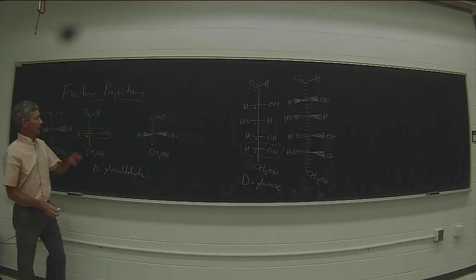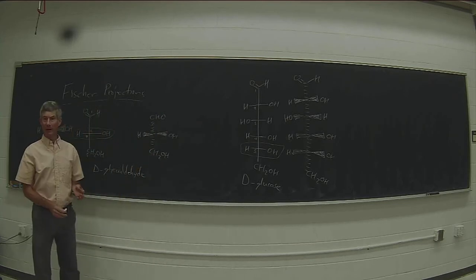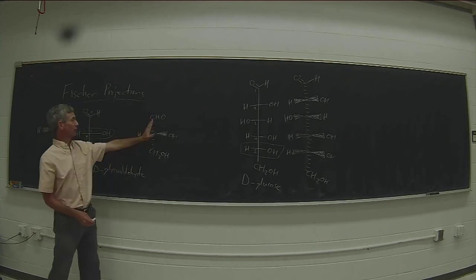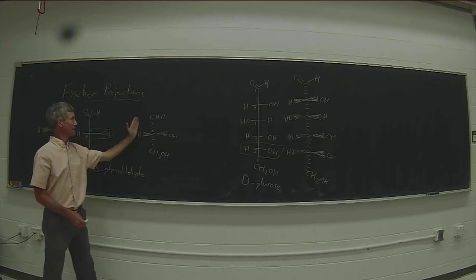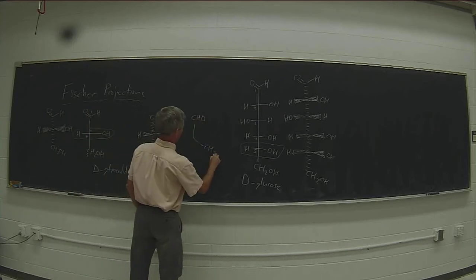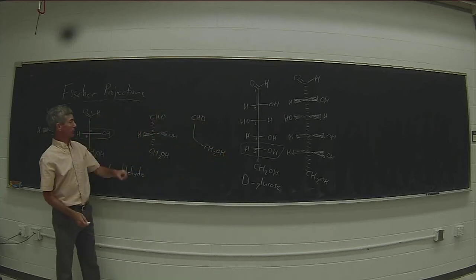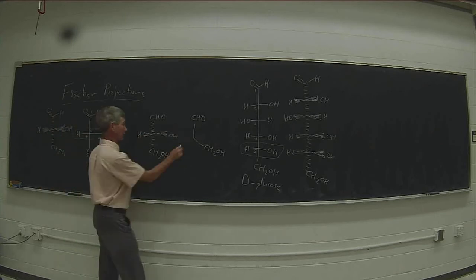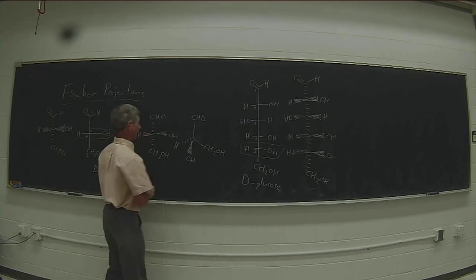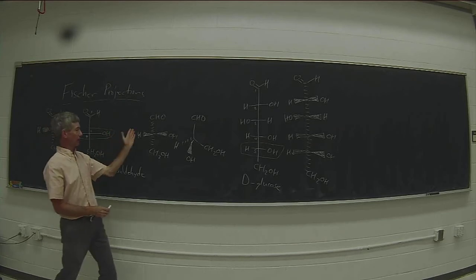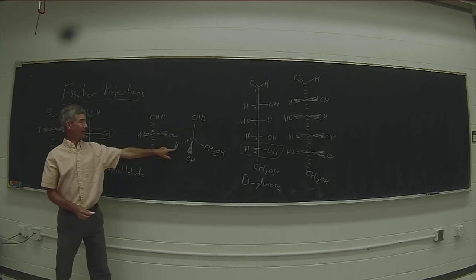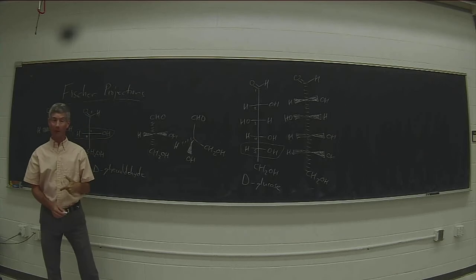But then the second thing you should do is place it into the plane of the board, so that everything that was on the vertical is now in the plane of the board. So I'm going to take this molecule and flip it so the CHO group is in the plane of the board, and the CH₂OH group is in the plane of the board. The hydrogen on the left is going back, and the OH group is on the right. I thought it that way rather than the other way because that allows me to put the hydrogen back.